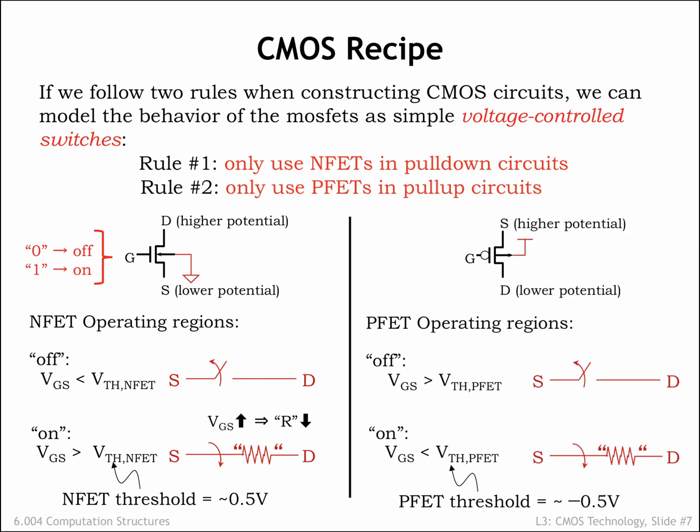The situation with PFET switches is analogous except that the potentials are reversed. Our rule is that PFETs can only be used in pull-up circuits, used to connect a signaling node to the power supply voltage, which we'll call VDD. When the pull-up circuit is conducting, the signaling node will be at VDD volts and qualify as the digital value 1. PFETs have a negative threshold voltage and VGS has to be less than the threshold voltage in order for the PFET switch to be conducting. All these negatives can be a bit confusing, but happily there's a simple mental model we can use for each PFET switch in the pull-up circuit: if the gate voltage is a digital 0, the switch will be on; if the gate voltage is a digital 1, the switch will be off.